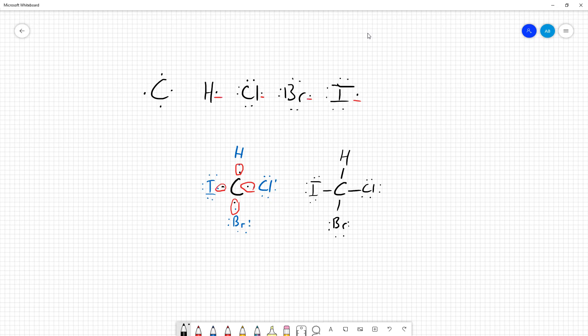So chlorine has six electrons in lone pairs, and the two in this bond for a total of eight. Carbon is sharing four single bonds with other things. So four single bonds have two electrons each, so carbon has its octet. And bromine and iodine are identical to chlorine.